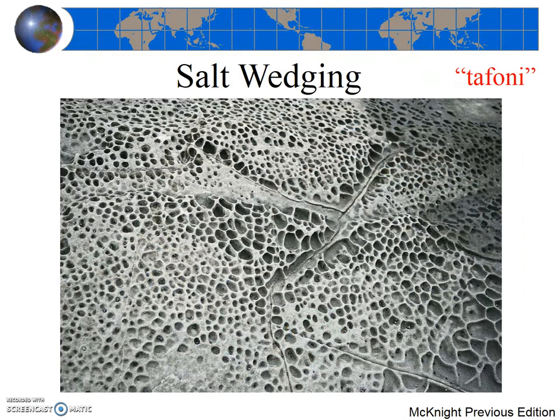A third type of mechanical weathering is salt wedging. Salt wedging forms when salt crystals grow and pry apart rock grains bit by bit. In coastal areas, salt wedging commonly occurs in sandstones in contact with ocean water or sea spray. During warm days, the water on the rocks evaporates, leaving the salts behind. As the salt crystals grow, the sandstone is broken apart to form a very distinctive honeycomb pattern called taffoni. Next time you are along the coast locally, look for taffoni along the seaside cliffs or rocks on the beach.